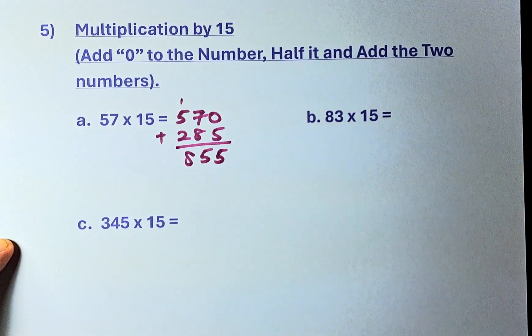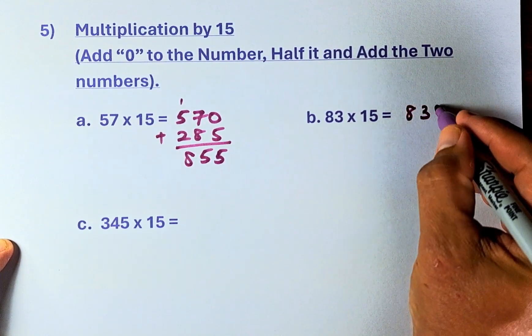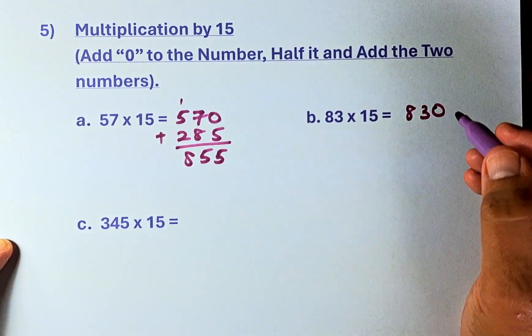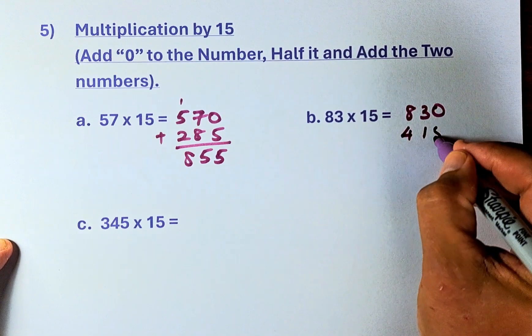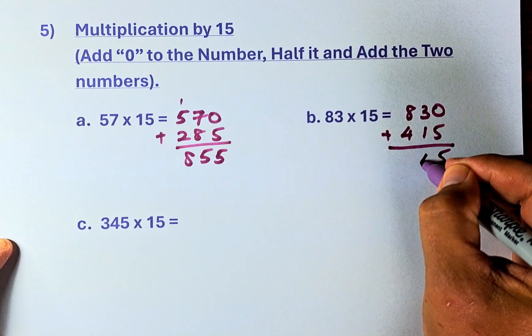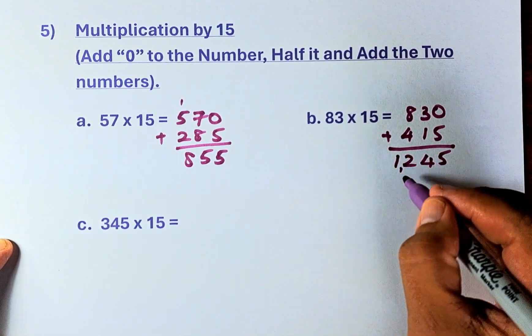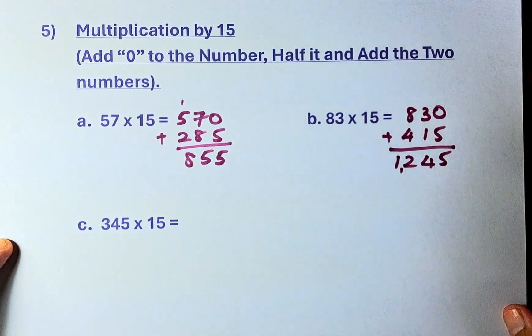So question part B, 83 times 15, so it becomes 830, and then you're going to have it, it's going to be 415, and then you're going to add them up. So 0 plus 5 is 5, 3 plus 1 is 4, 8 plus 4 is 12, so the answer is 1245.